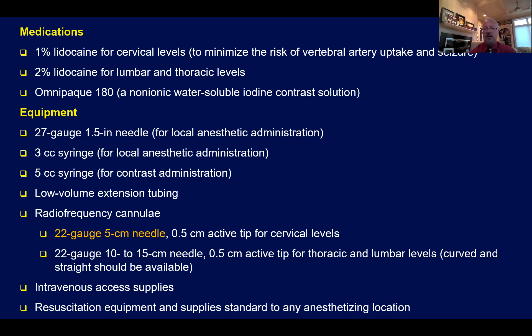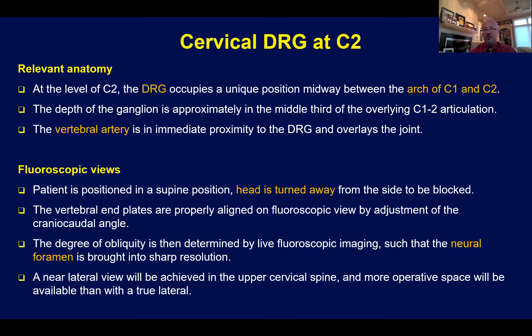The 5-millimeter active tip is very effective. The needle is Teflon-coated, so all the energy is dispersed past the Teflon in an oblate spheroid or matchhead-like orientation outside the tip, about 2 millimeters in every direction, unless larger cannulas are used. For lower levels, you can use a 22-gauge, 10- to 15-centimeter needle with a 10-millimeter or 1.5-centimeter active tip, though I don't typically use these for cervical DRGs. Resuscitation equipment is, of course, important.